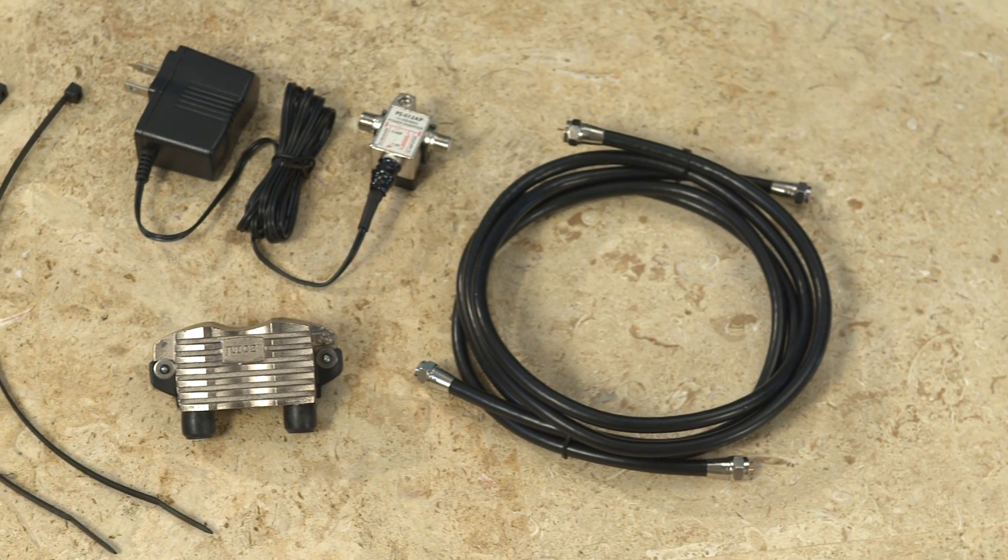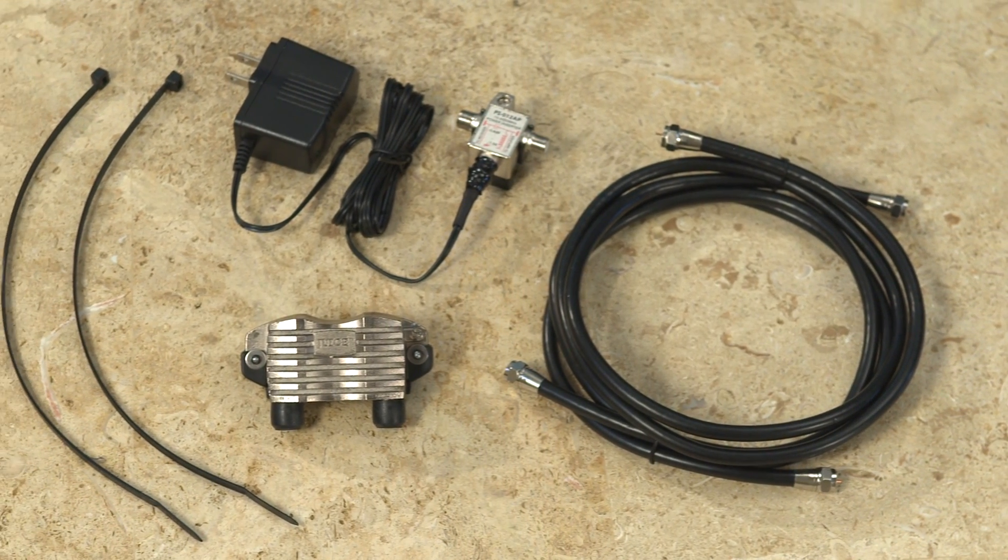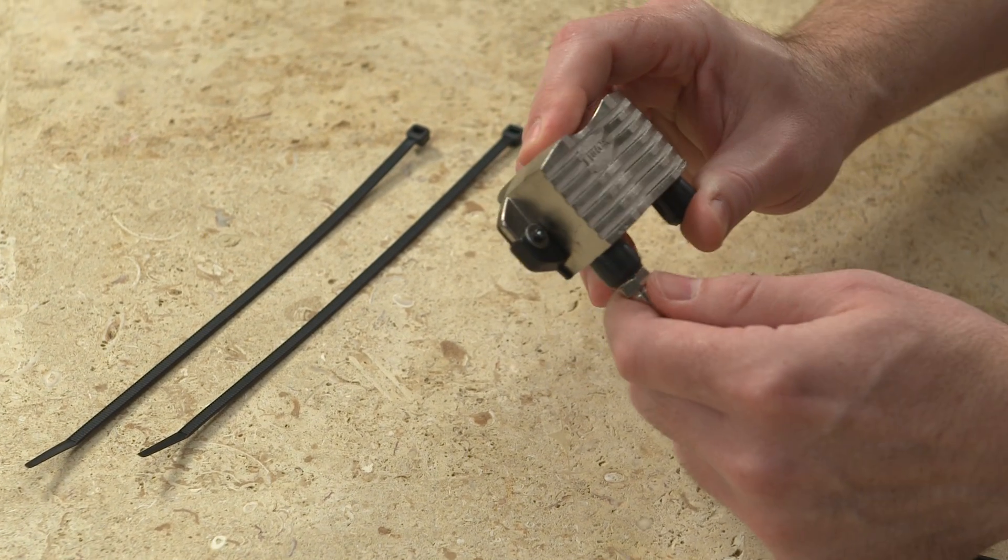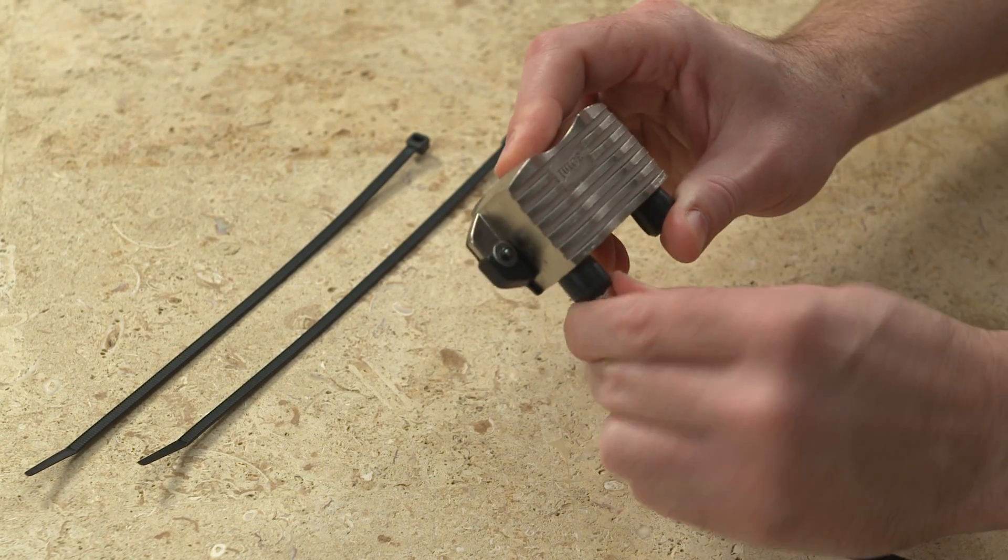The JUICE comes with everything you see here, with no tools required for assembly. First, connect one of the provided 36-inch coaxial cables into the JUICE port labeled IN.